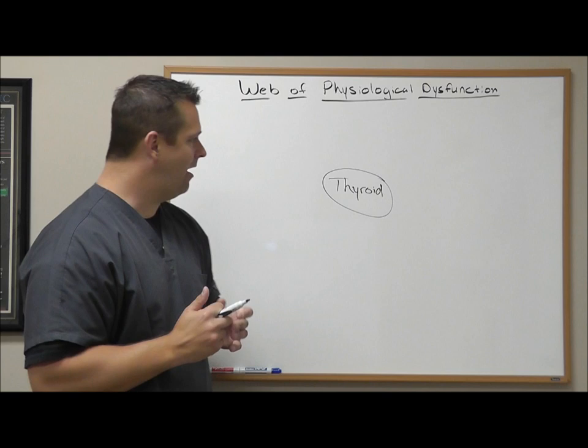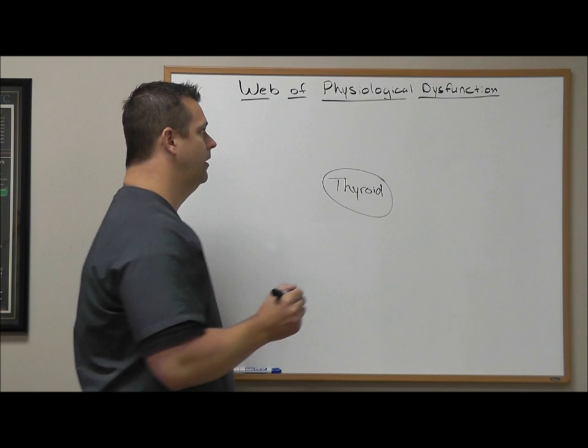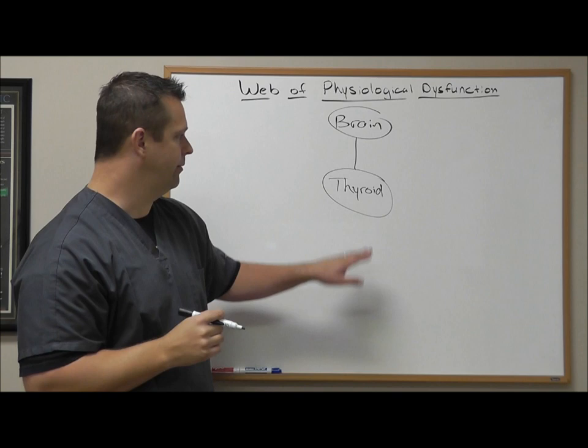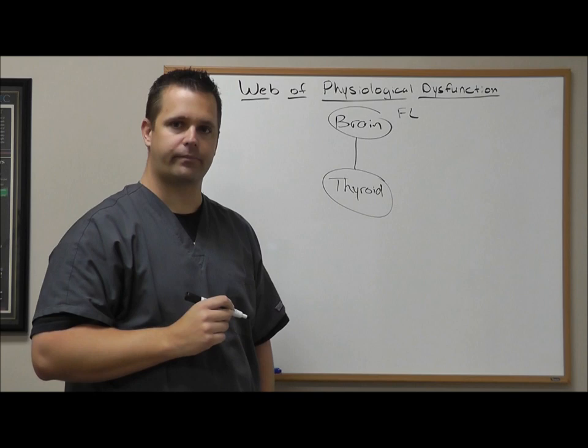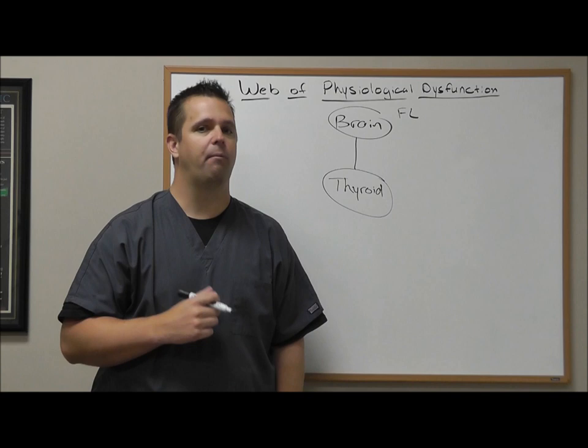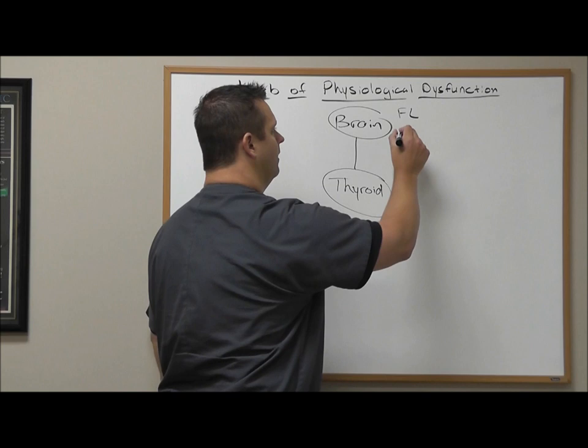Now let's look at this web and see how the rest of our body can truly affect our thyroid. The first part of this web is our brain. There are many parts of our brain, but I'm going to talk about three main parts today. The first part is the frontal lobe. How do you know you have a problem with the frontal lobe? Well, you have personality changes, very poor judgment, you make wrong decisions pretty frequently, and you have poor insight on things. Those are all symptoms of somebody who has a poor functioning frontal lobe.